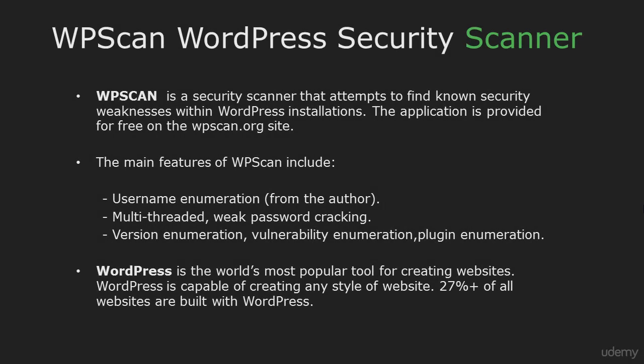Hi and welcome back. In this tutorial I'm going to make a quick tour for WPScan, which is a security scanner that helps you to find security weaknesses within WordPress installations. The main features of WPScan are username enumeration, password cracking, vulnerability enumeration and plugin enumeration.